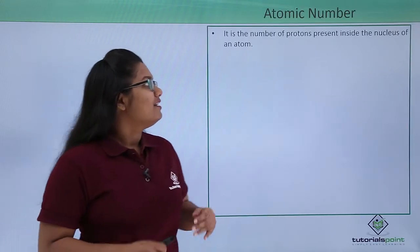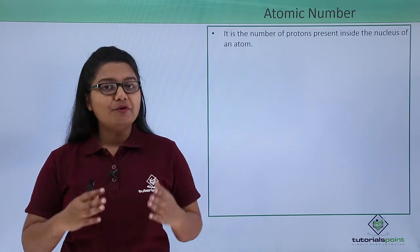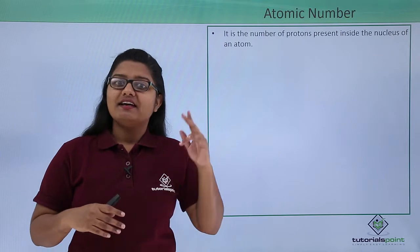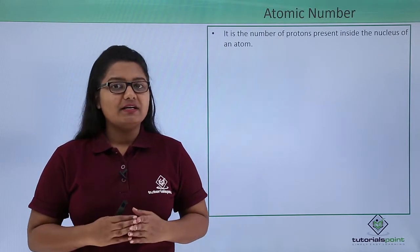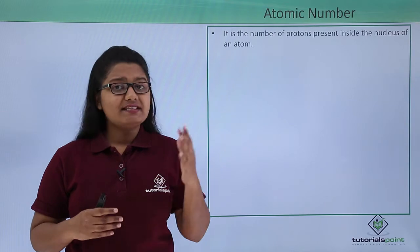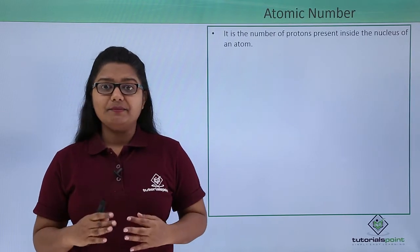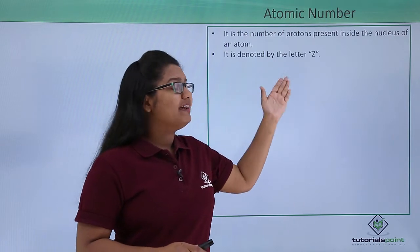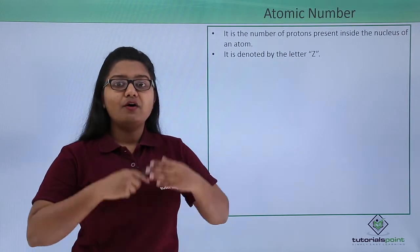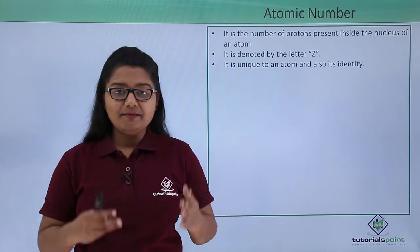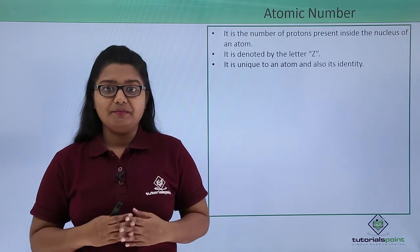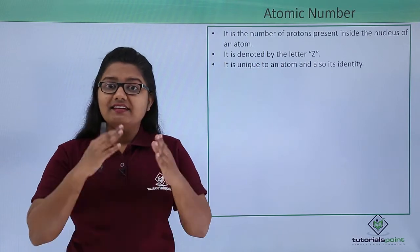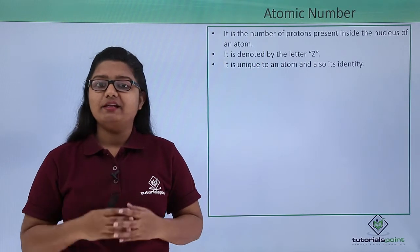Atomic number represents the total number of protons present inside the nucleus of an atom. If an atom has 2 protons, its atomic number is 2, and if it has 10 protons, its atomic number becomes 10. This atomic number is represented by the letter Z. All atoms of a particular element have the same atomic number, which represents their identity, and it is unique to all the atoms of that element.